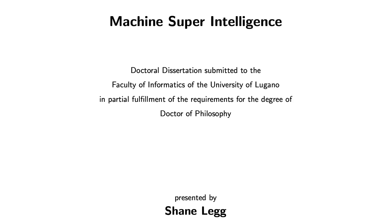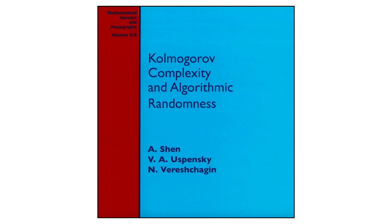If you think the last paper was long, the following is an entire doctoral dissertation written back in 2008 called Machine Superintelligence. The thesis explores the theoretical foundations and implications of artificial general intelligence, surpassing human intelligence, and dives into the potential risks associated with superintelligent systems and the necessary precautions to ensure their alignment with human values and safety. Definitely read this one if you want to learn more about artificial superintelligence.